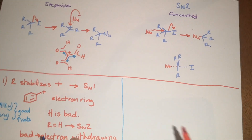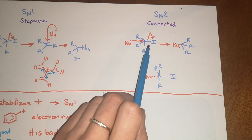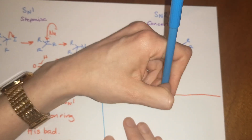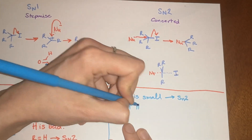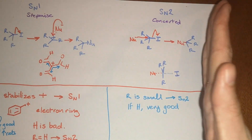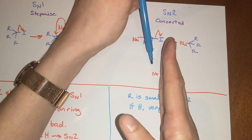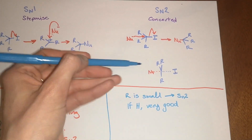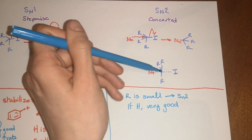If you look at SN2 reactions, they have very different needs. Because you're not forming a positive charge, it doesn't really matter if the groups are electron-donating or withdrawing. What you want is for R to be small — then you'll typically get an SN2 reaction. If R is hydrogen, that's very good. The reason is that if your R-groups are really, really big — imagine something the size of my fist attached — that nucleophile is going to have a really hard time trying to get in to the carbon in the middle. So if you have something like a hydrogen, that's really, really good.